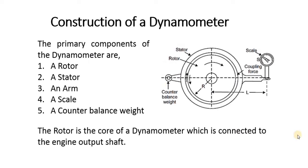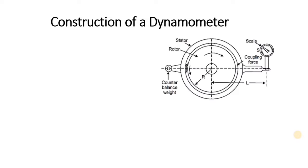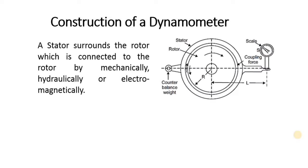The rotor is the core part of a dynamometer which is connected to the engine output shaft. A stator surrounds the rotor which is connected to the rotor mechanically, hydraulically or electromagnetically.